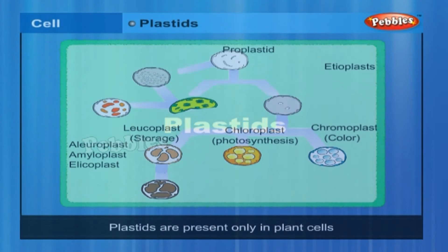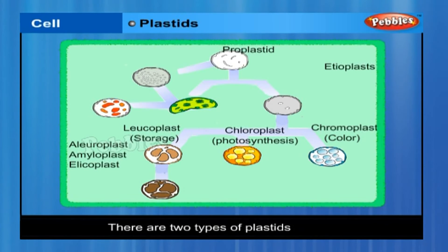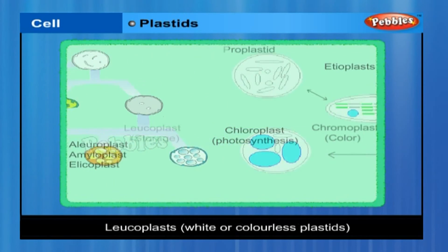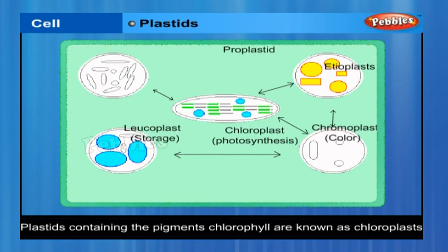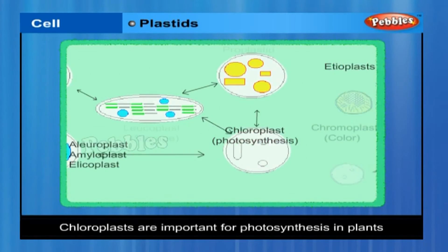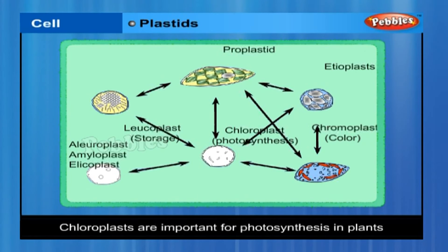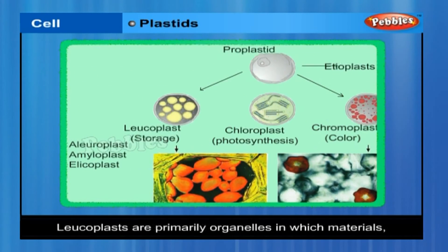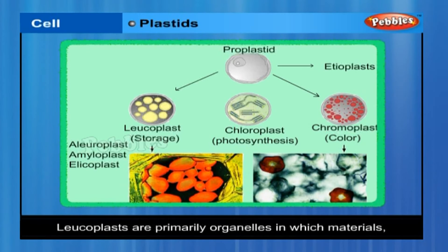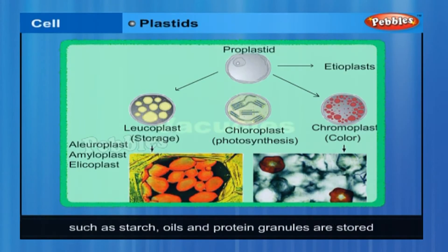Plastids are present only in plant cells. There are two types: chromoplasts, which are coloured plastids, and leukoplasts, which are white or colourless plastids. Plastids containing the pigment chlorophyll are known as chloroplasts, which are important for photosynthesis in plants. Chloroplasts also contain various yellow or orange pigments in addition to chlorophyll. Leukoplasts are primarily organelles in which materials such as starch, oils and protein granules are stored.